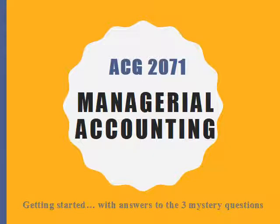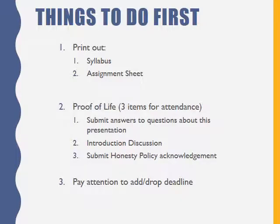Now, let's grab a pencil and paper as you'll need it to write down the three items so you can answer this part of the proof-of-life requirements, along with the Canvas Orientation Quiz and the Introduction Discussion. It's important to print out the syllabus, letter to the class, and the assignment sheets. This is for you to have access to important information at all times.